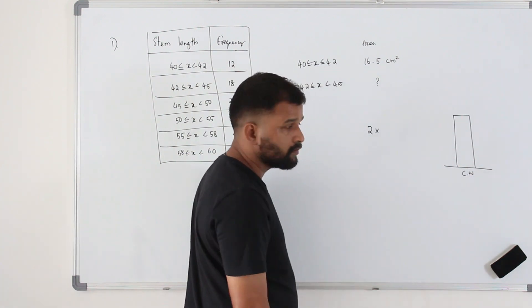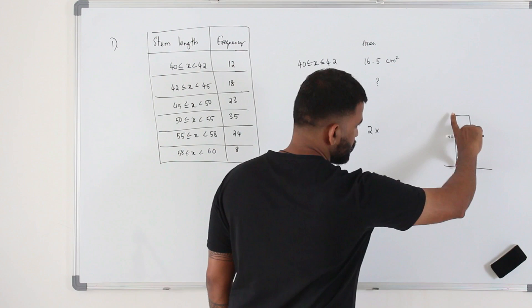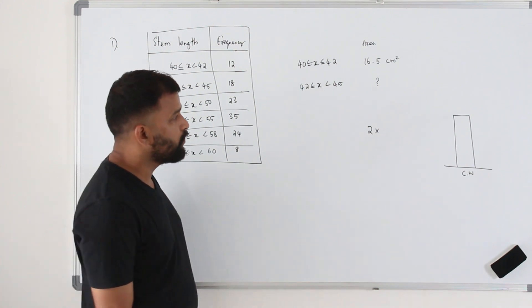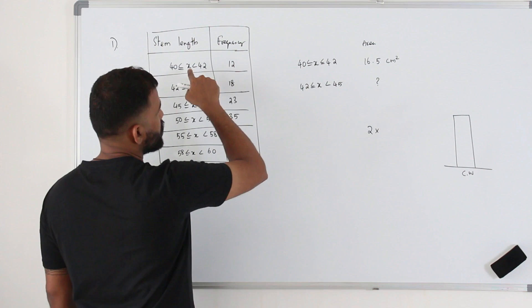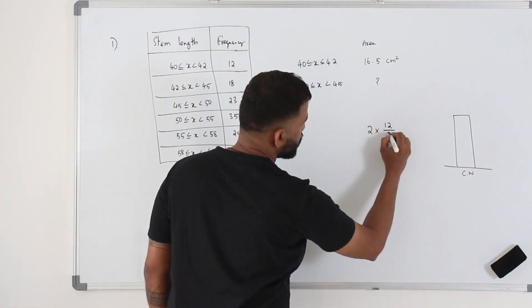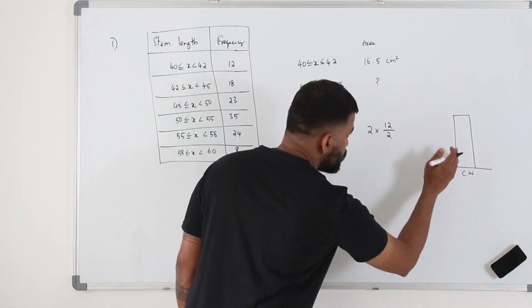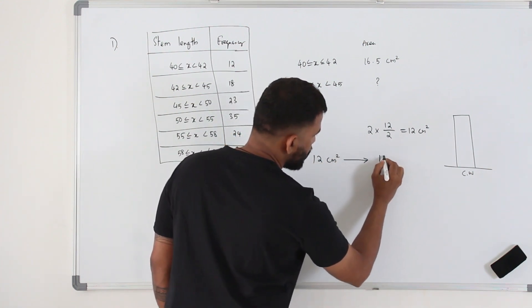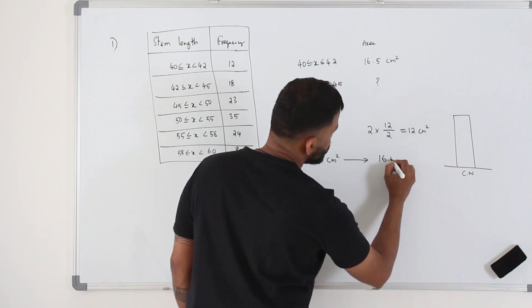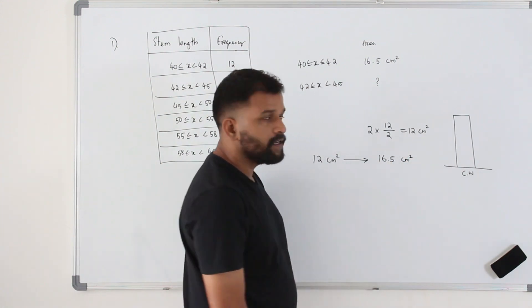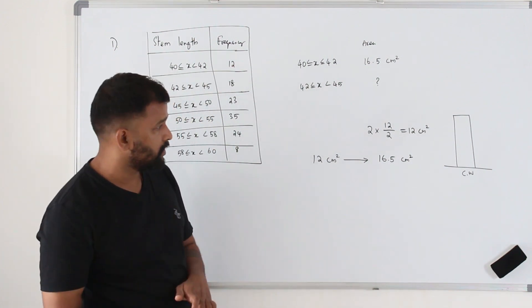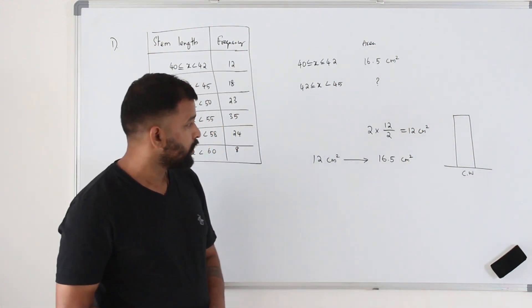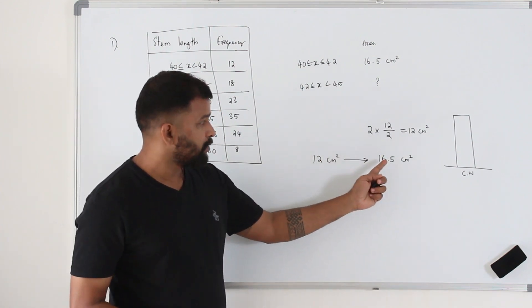The class width is 2. Because it's a rectangle, the area is length times breadth. So this height or length would be the frequency density of this class interval. How do we find the frequency density? Frequency divided by class width. The frequency is 12 divided by the class width. So the area of this bar is supposed to be 12 centimeters square. But in the actual histogram, it's 16.5 centimeters square. Why is that? Because they might have used some scale factor to reduce the height or reduce the class width. So 12 is being represented by 16.5.